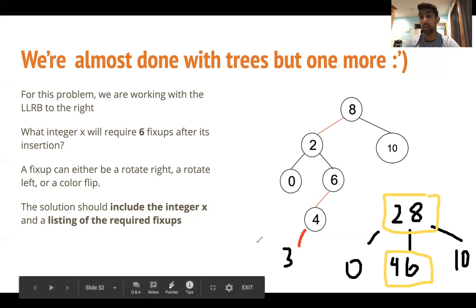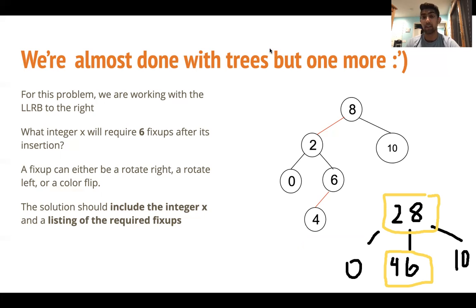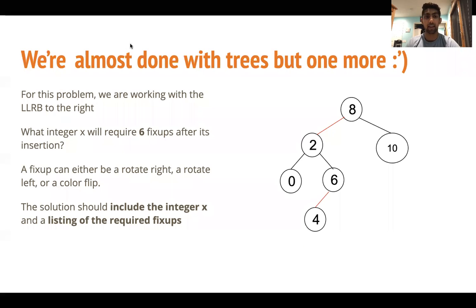But the gist is, after inserting 3, you realize that this is only 5 fix-ups. So somehow, we need to get one more fix-up. And to do that, what we can do is insert the number 5. So let's quickly look at the solution.